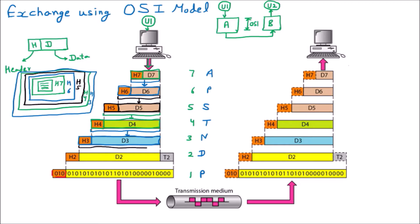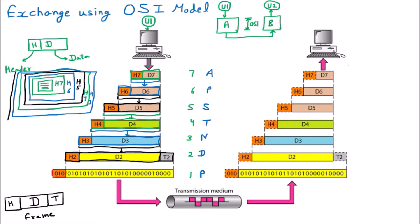An interesting thing about the data link layer is framing. In framing, we put both a header before the data and a trailer after it - both head and tail are applied. This is called a frame. The data link layer is the only layer that adds both header and trailer. So H2 and a trailer are added, and we assume this is all in one envelope with both header and trailer.